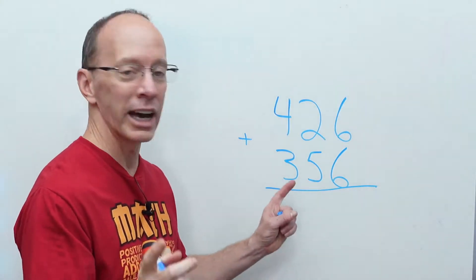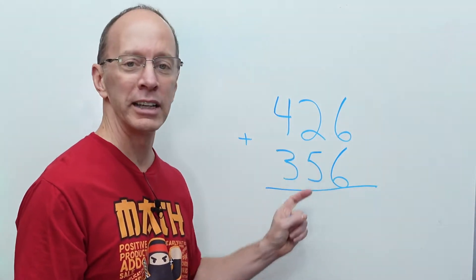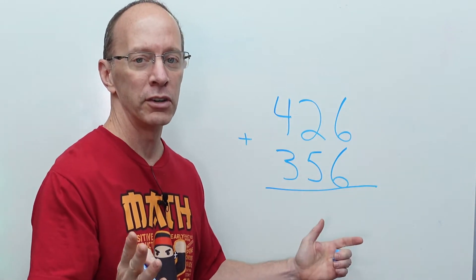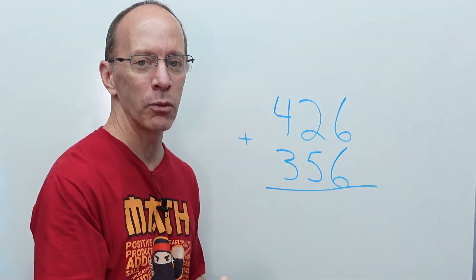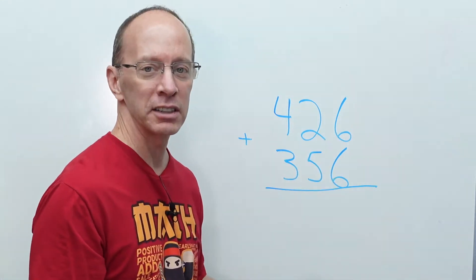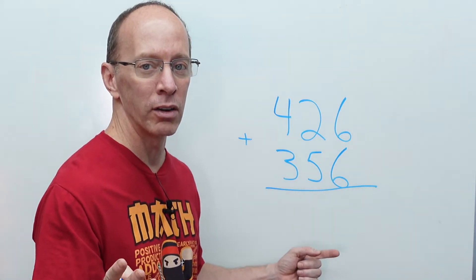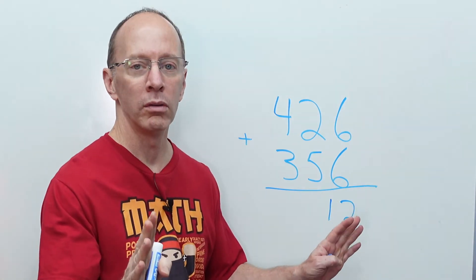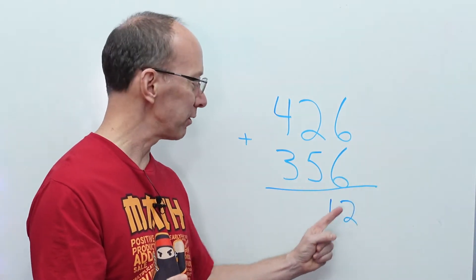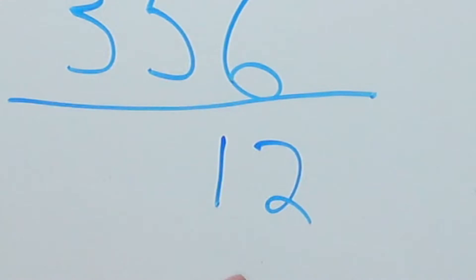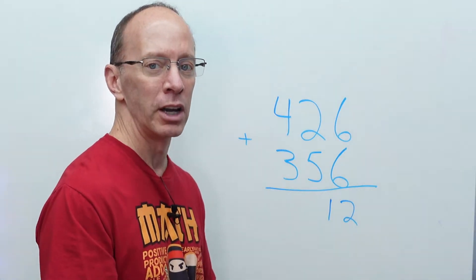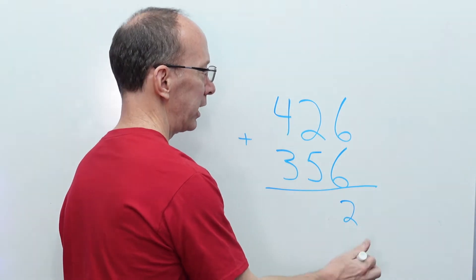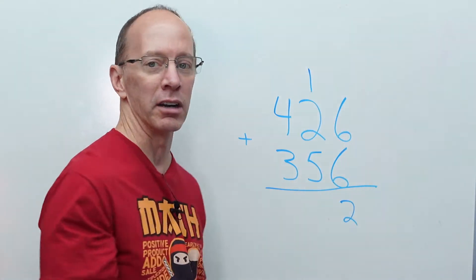All right, we got our next problem here. 426 plus 356. What do we do first? That's right, we add the ones. 6 plus 6. Double fact. What is it? Boom! 12. All right, so we put a 12 here. Whoa! We can't just put a 12 here. We have to do something with this 1. That is in the tens place. Remember our regrouping? We got to throw it over in the tens place. So, we erase this 1 right here, and we put it up here.